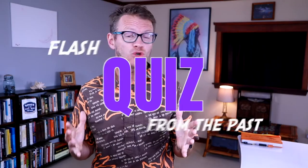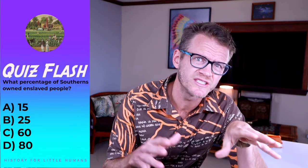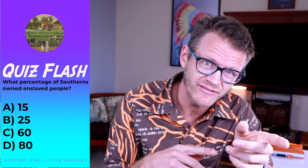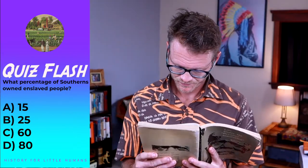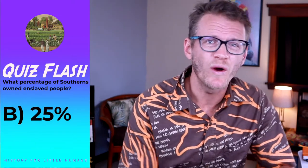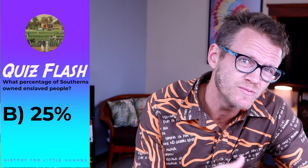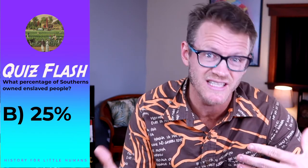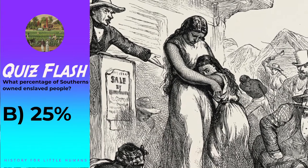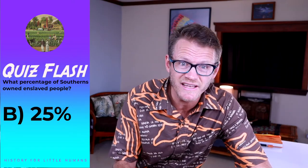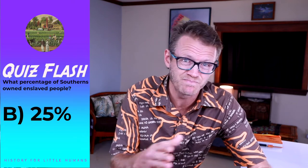And that brings us to our quiz flash from the past. What percentage of Southerners do you guess owned slaves? 15%, 25%, 60%, or 80%? The answer is B. Only 25% held slaves because most people in the South could not afford to purchase an enslaved person. It was a huge, expensive — and revolting — business, slave trading. But even if most white Southerners could not afford to purchase slaves, many still aspired to. It was part of what it meant to be successful in the South.